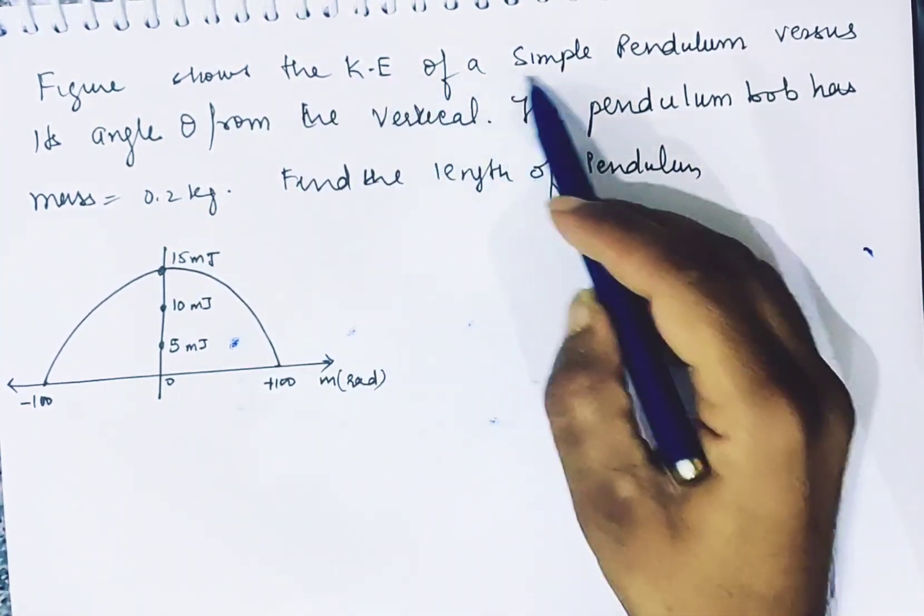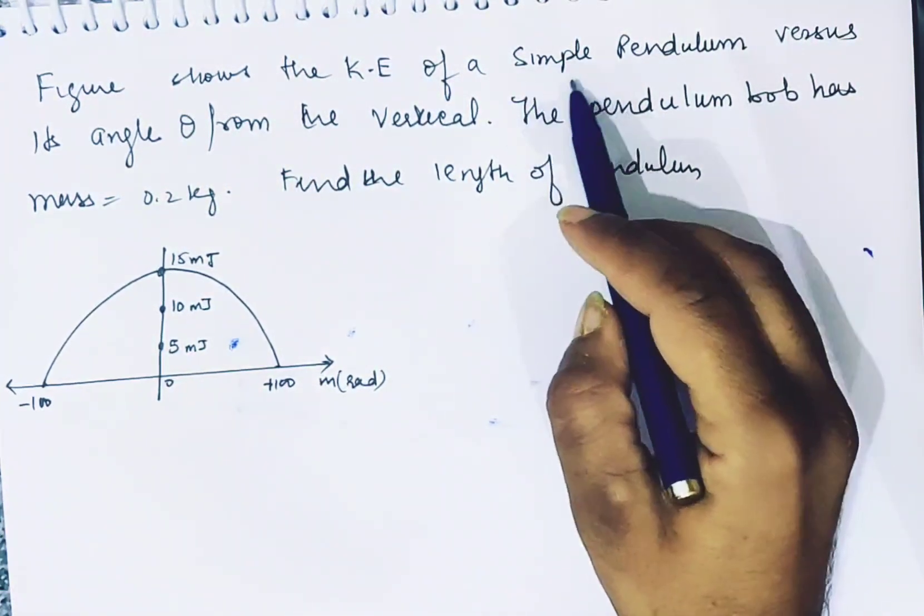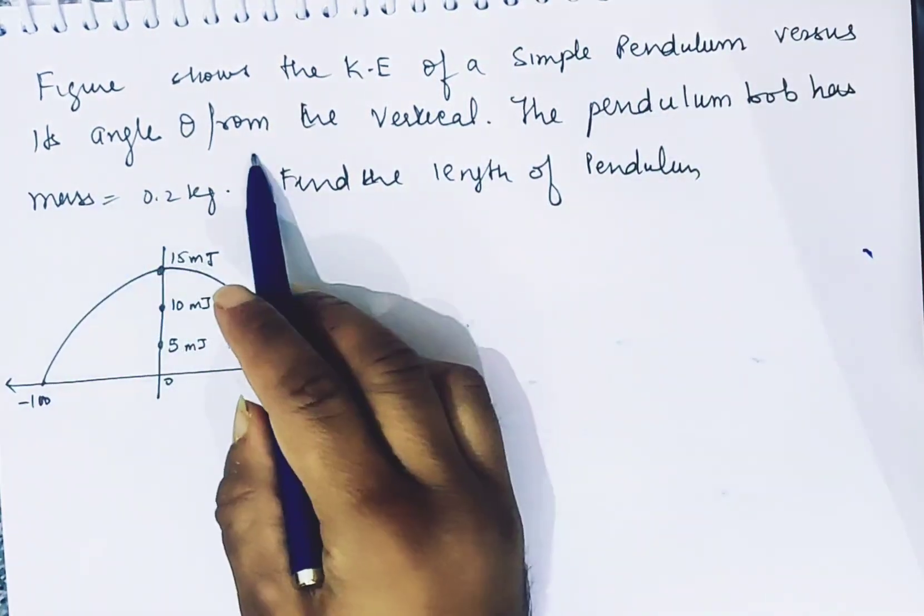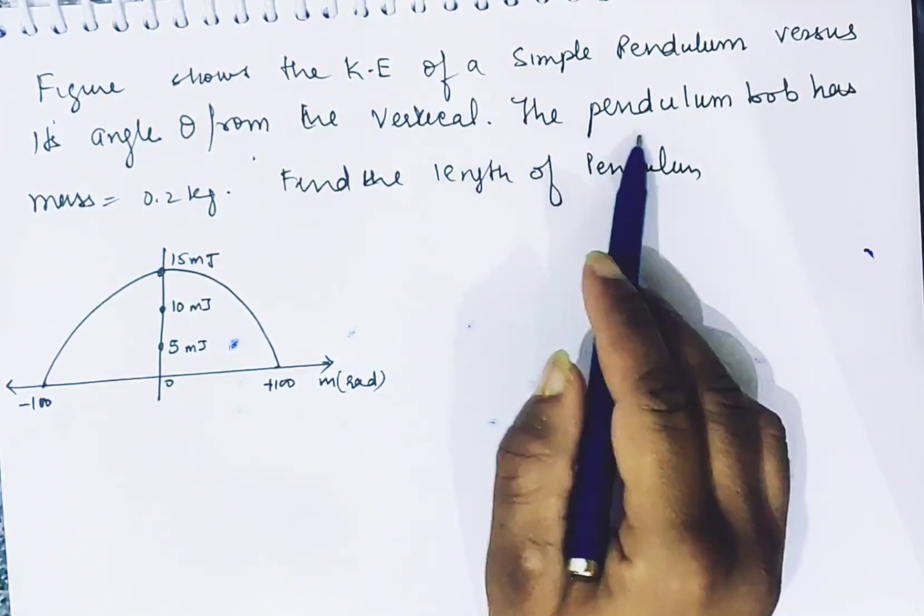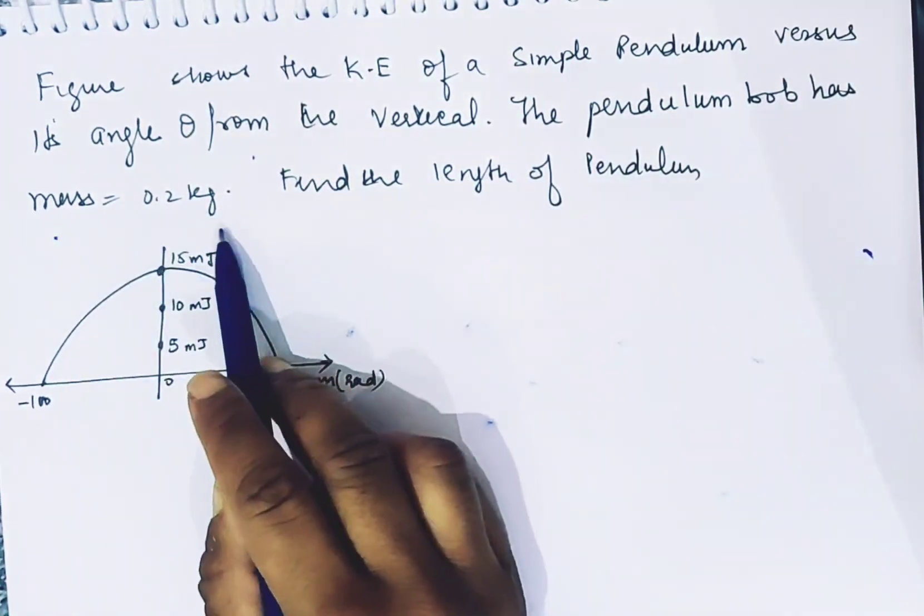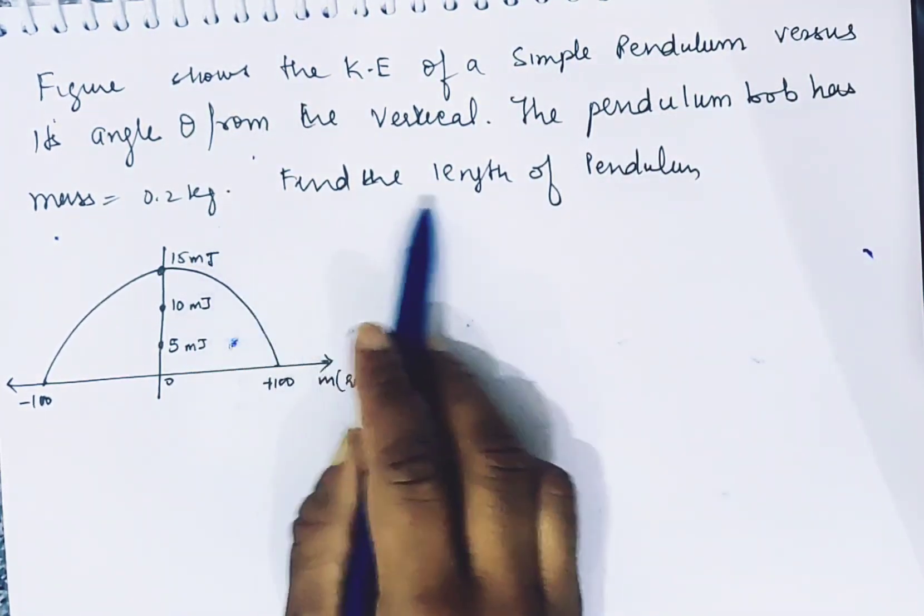From the figure shown, the kinetic energy of a simple pendulum versus its angle theta from the vertical. The pendulum bob has mass 0.2 g. Find the length of pendulum.